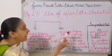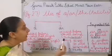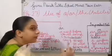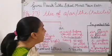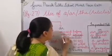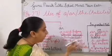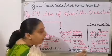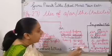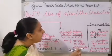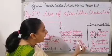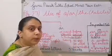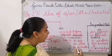Then we move on to AN. AN is used before the vowel sounds. The five vowels are A, E, I, O, U. Don't only look for the vowel letter — go for the sound of that particular word. For example: an egg, an ink pot, an umbrella. Egg starts with an 'a' sound, ink starts with an 'i' sound, umbrella starts with a 'u' sound. So whenever the word begins with a vowel sound — A, E, I, O, U — then you will be using AN.